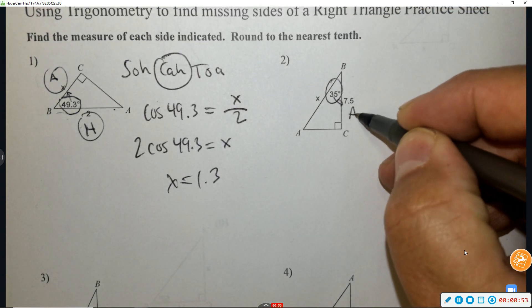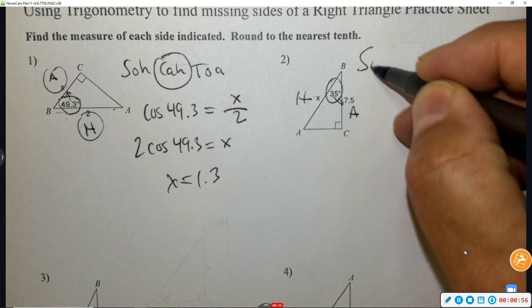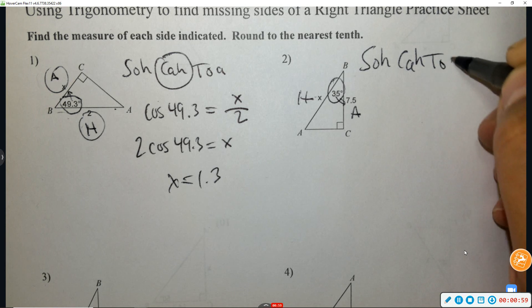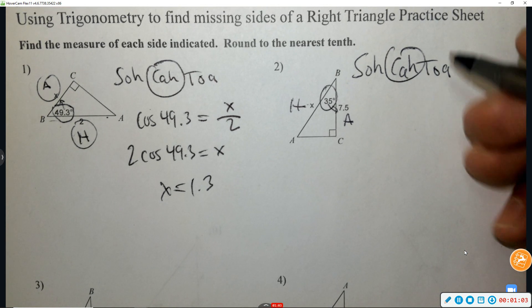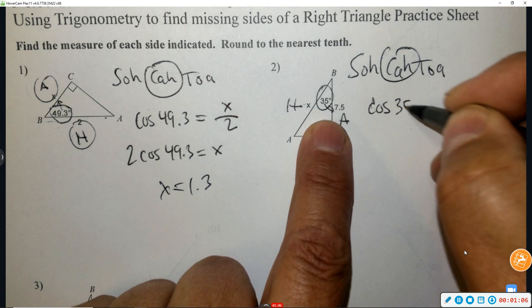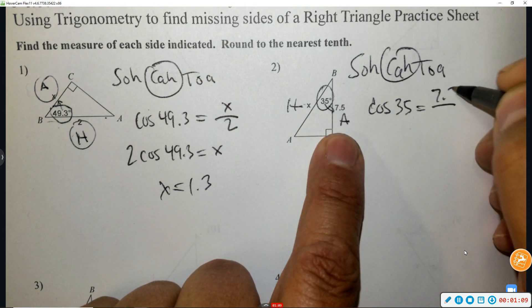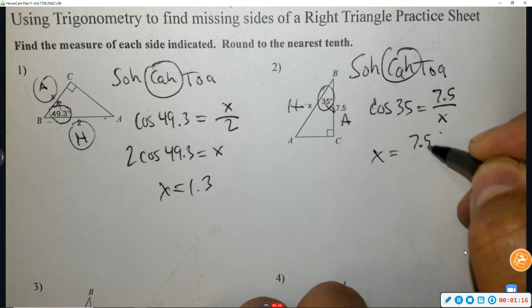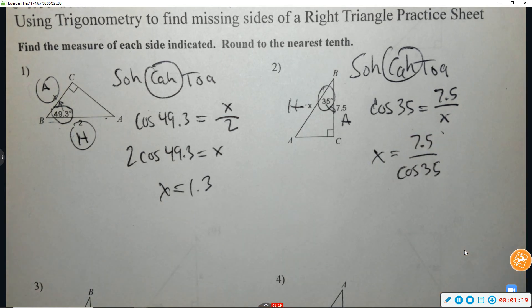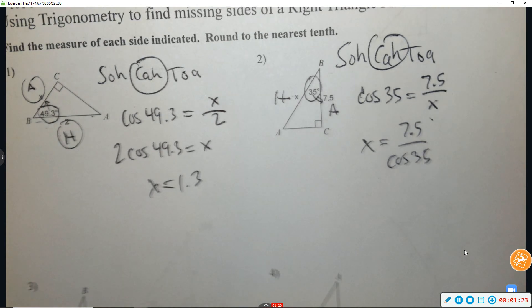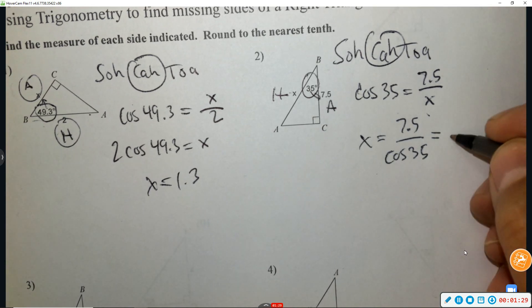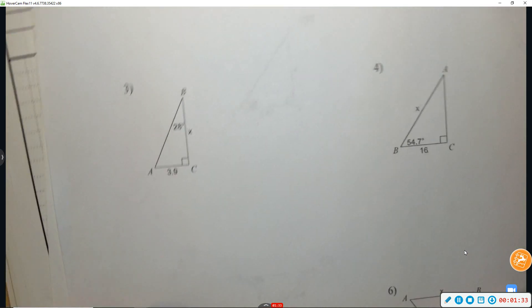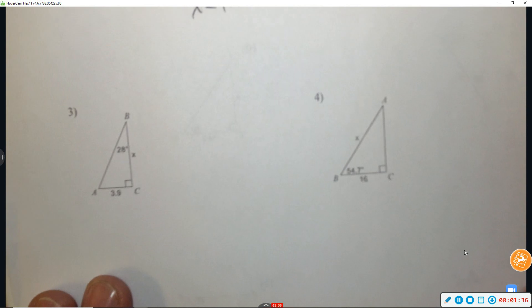Number two: circle the angle. 7.5 is adjacent, x is the hypotenuse. Using SOH-CAH-TOA, adjacent and hypotenuse uses cosine. So we write cosine of 35 equals adjacent over hypotenuse. When x is in the denominator, they trade places, so it becomes 7.5 divided by cosine 35. Use your calculator — you get 6.1.